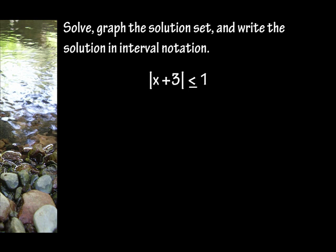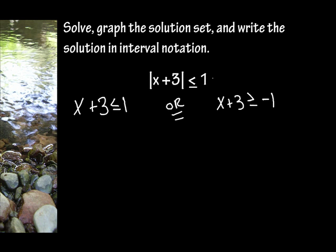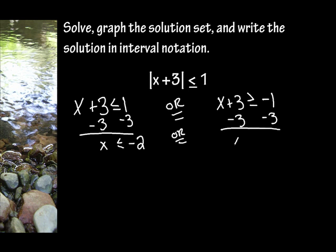Solve, graph the solution set, and write the solution in interval notation. So what we do is we write what we see — the original — without the absolute value. Then we write it as x plus 3, we change the sign direction, and we change this to its opposite, which is negative 1. Now we're going to solve just as if this was an equal sign. I'm going to subtract 3 from both sides of the inequality, so x is less than or equal to negative 2. Or, once again, I'm going to subtract 3, so x is greater than or equal to negative 4.